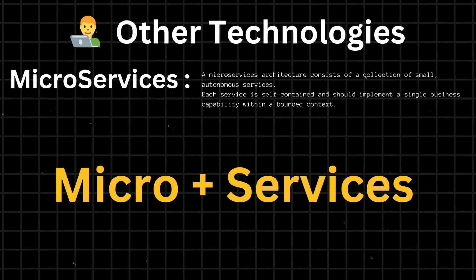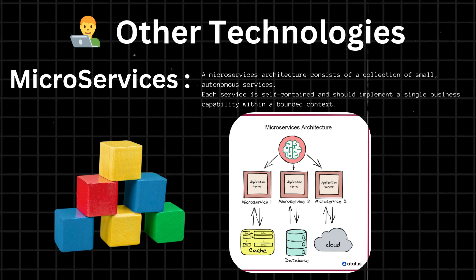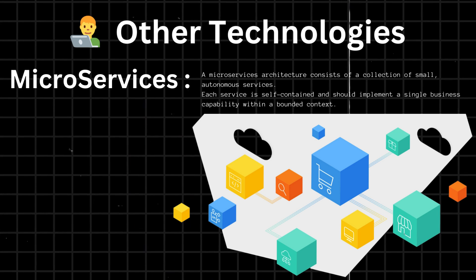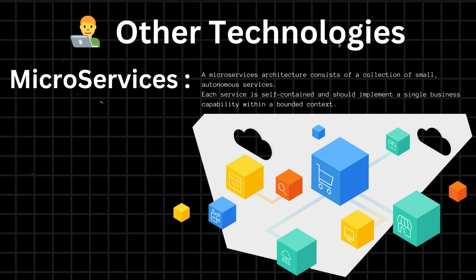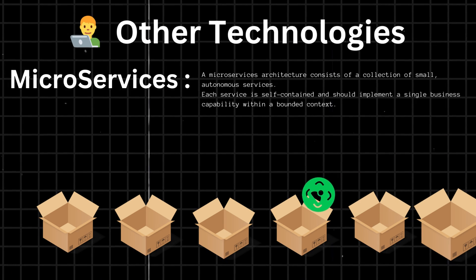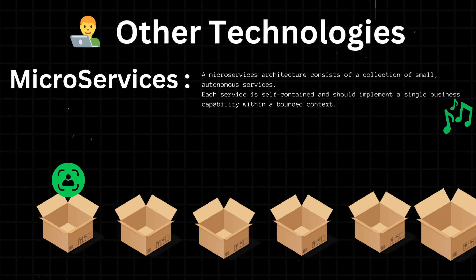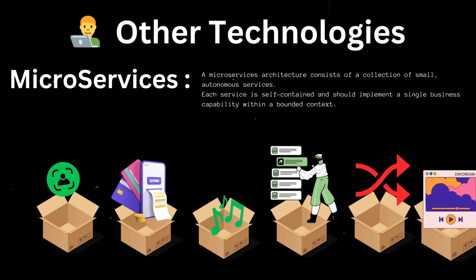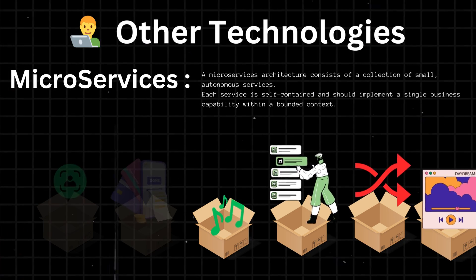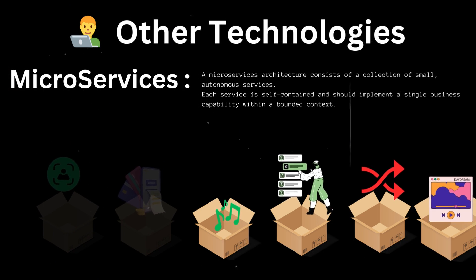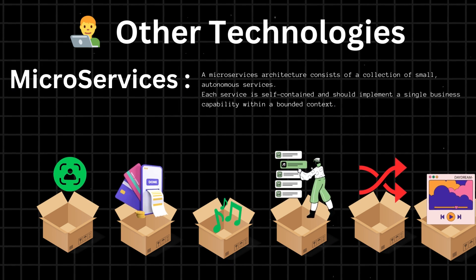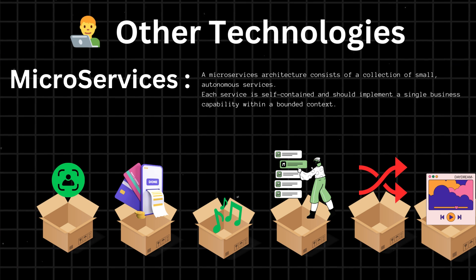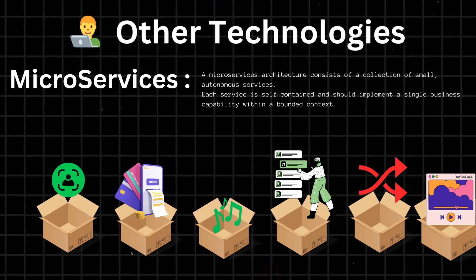Microservices. A microservices architecture is a software development approach where applications are broken down into small, independent services that communicate with each other over APIs. Each microservice is developed and deployed independently, allowing for greater flexibility and scalability. Each service handles specific functionality such as user authentication, music catalog, or payment processing, and can be developed in different programming languages and run on different servers or clusters. Spotify's backend is built using a microservices architecture, which allows for better scalability since each service can be scaled independently, letting Spotify add more resources to specific services that require more processing power or traffic without scaling the entire system.